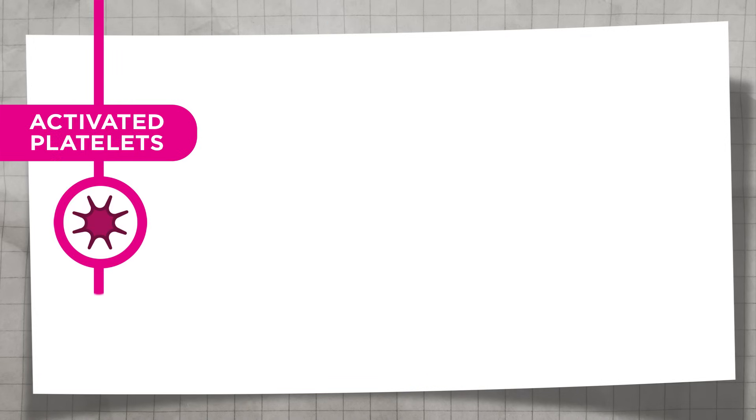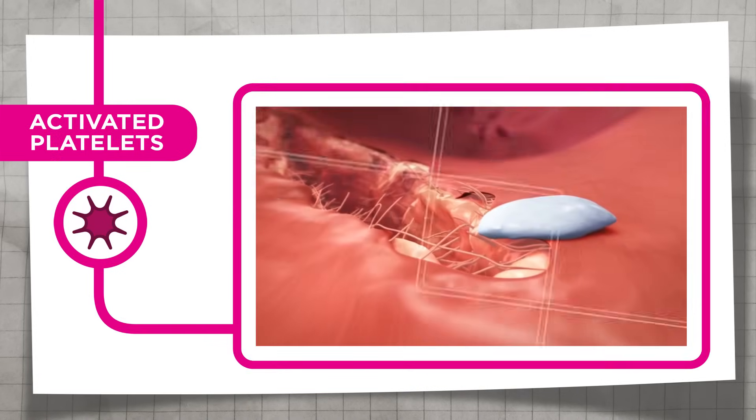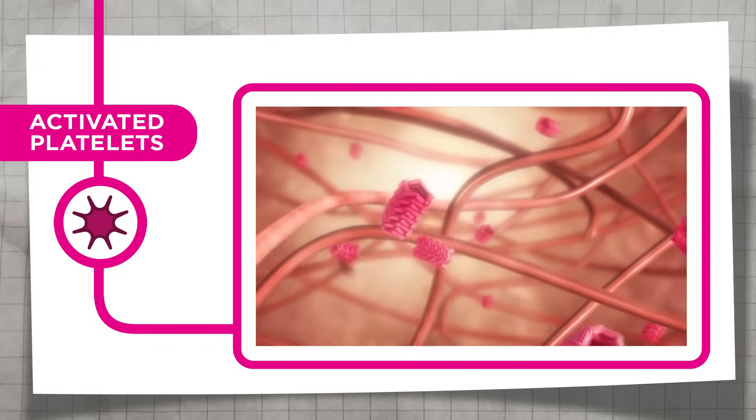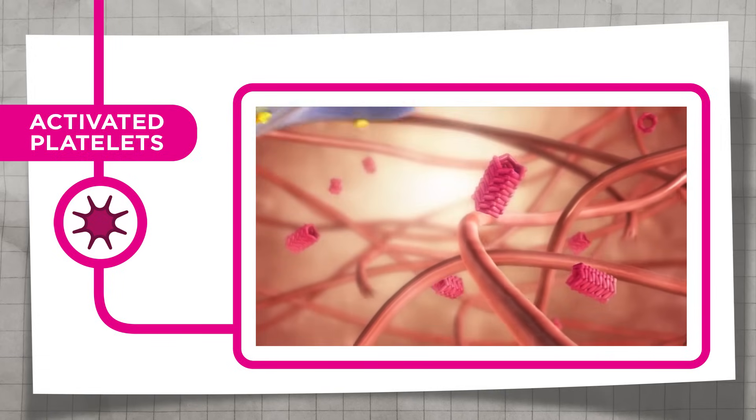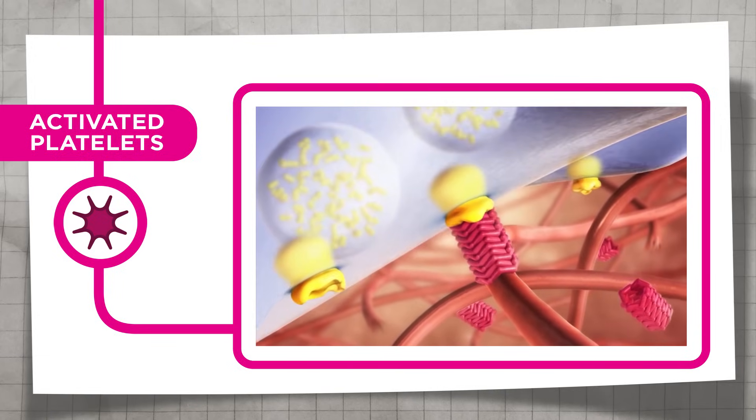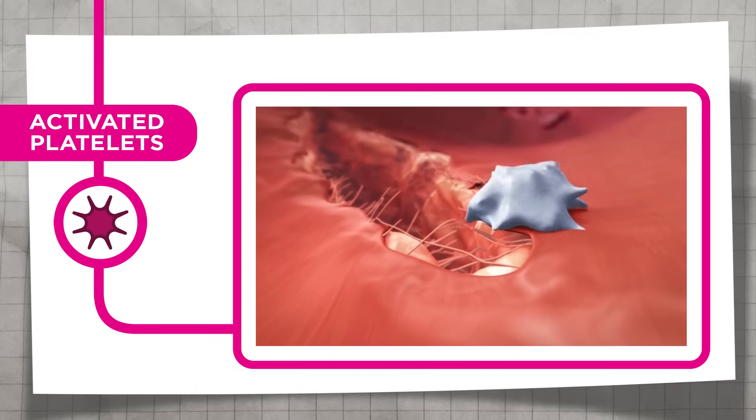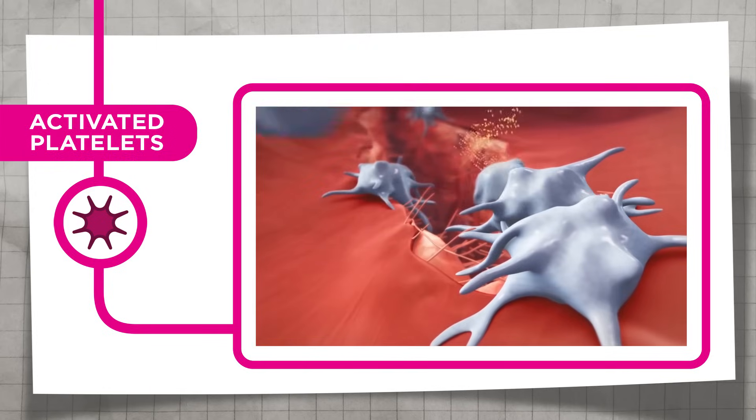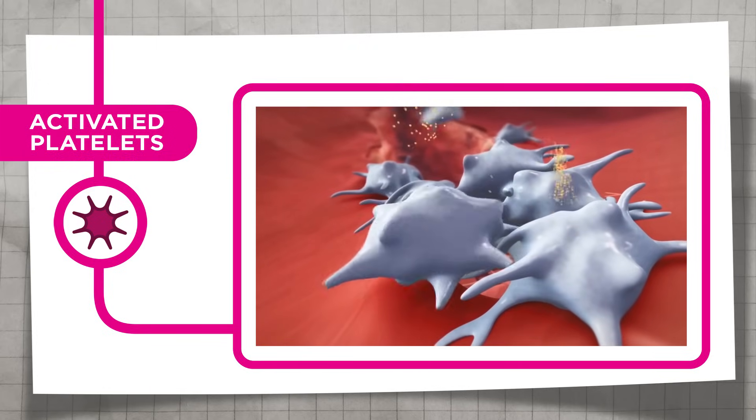Platelet activation and aggregation begins when vascular injury exposes collagen and von Willebrand factor from within the vessel wall to the blood. Platelets adhere to these proteins and become partially activated, changing shape and releasing signaling molecules which recruit more platelets to the site.